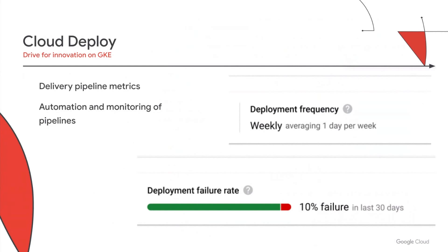Deployment frequency measures how often an organization successfully deploys resources to production. Based on DORA's performance reports, elite performers deliver to production multiple times per day. Another metric Cloud Deploy tracks is deployment failure rate — the percentage of deployments that have failed. This helps you measure the reliability of your pipeline and infrastructure, while also providing a signal if more focus needs to be made to reduce failed rollouts. By delivering new capabilities quickly and reliably, organizations are able to innovate faster and be more competitive, providing the best experience to their end users. Cloud Deploy provides both automation and monitoring capabilities for your delivery pipelines to GKE.